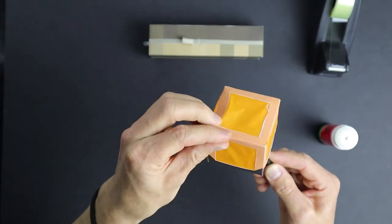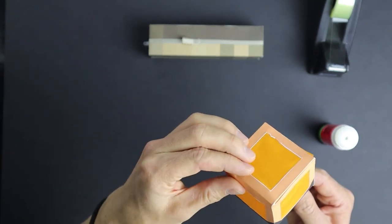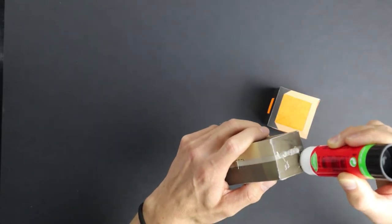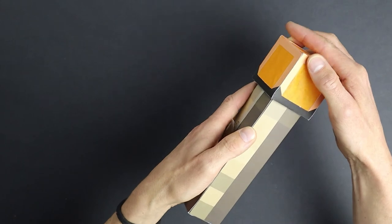When gluing the light body together, use the back of a pen to help with the gluing from inside the cube. Now glue the light body to the handle. And you are done.